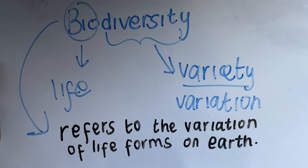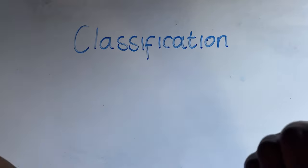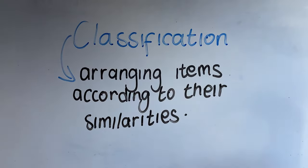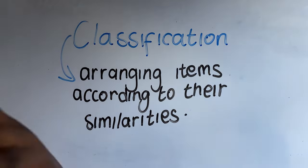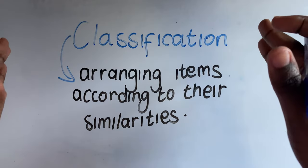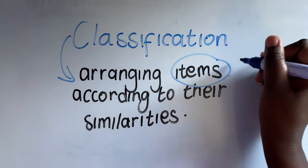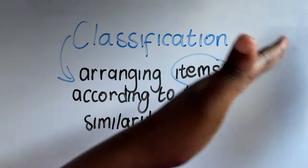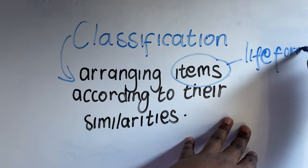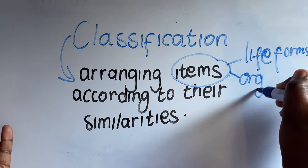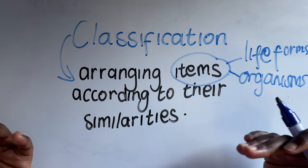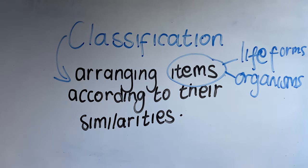When we look at classification, we are looking at arranging items according to their similarities. However, since we're talking about biodiversity and life forms, we are classifying these very life forms — arranging organisms according to their similarities. That's what classification is.